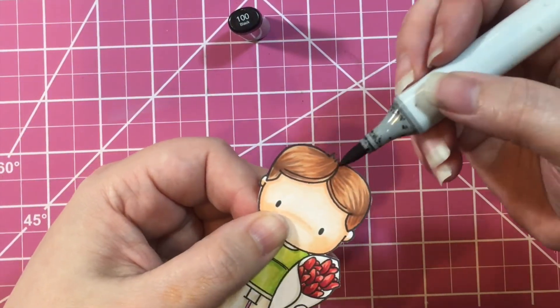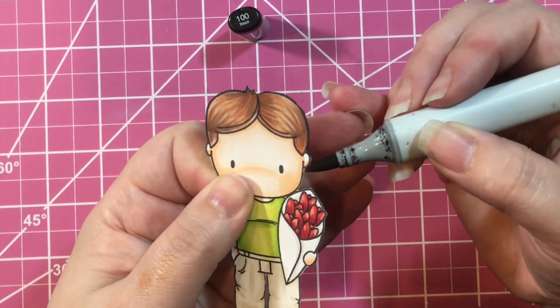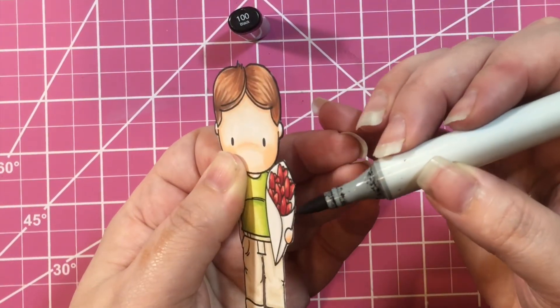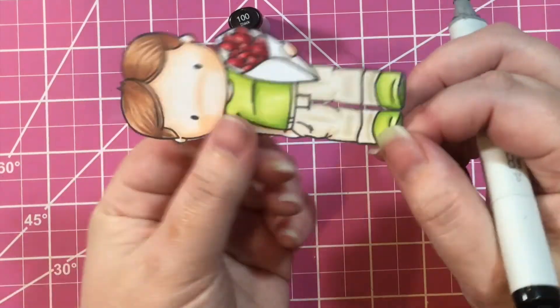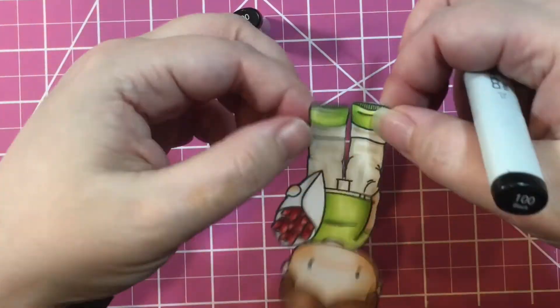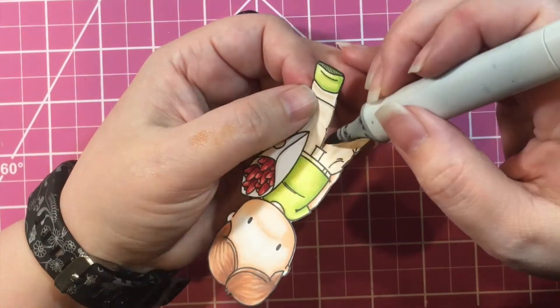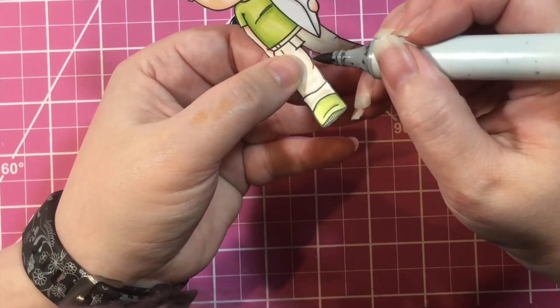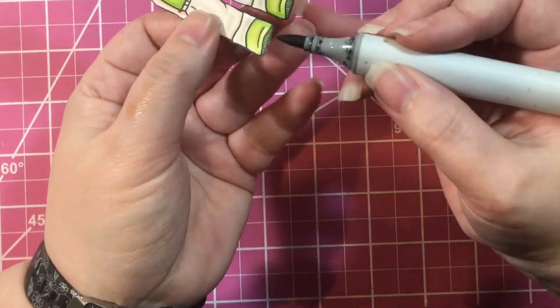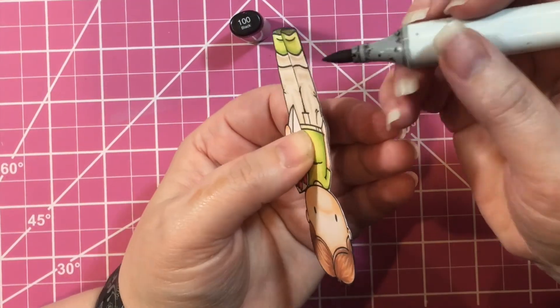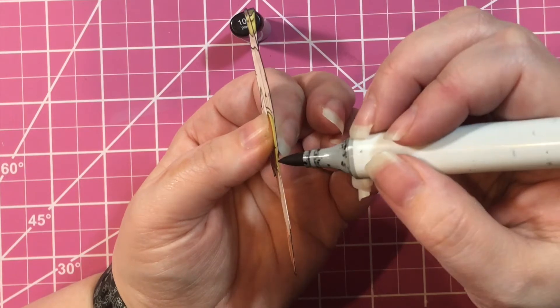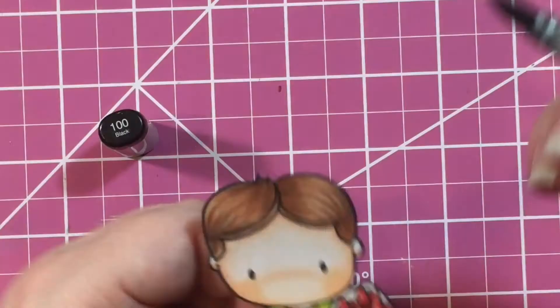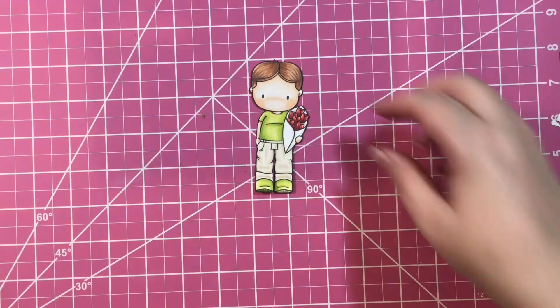When I cut him out with my scissors I went right up to the black line, so I did not leave any of the white around him. That leaves a little bit of white paper along the edges, so I take a Copic marker number 100 black and I'm just going around the outside of the image coloring the little white bits that are left over so that he looks nice and finished when I put him on the card. Otherwise you'd see these little white bits here and there and it just didn't look very good.